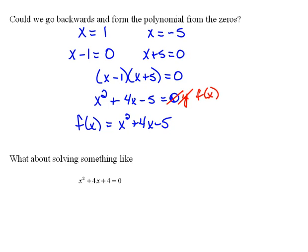In the last video, we talked about how we could start off with a function and find the x-intercepts, or the zeros. And going backwards, we could be given x-intercepts or zeros and then from that find the function.